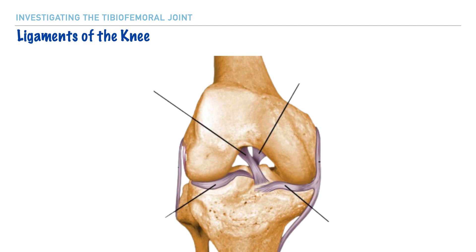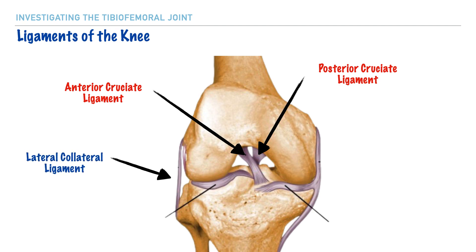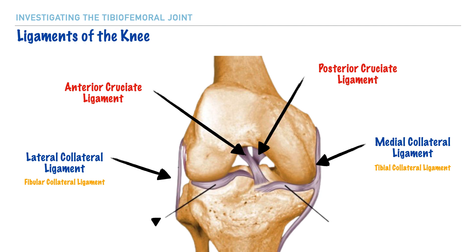Now that we've covered the general bony anatomy of the knee joint, let's look at the most prominent ligamentous structures. First, we have the anterior cruciate ligament, or ACL. Just behind it is the PCL, or posterior cruciate ligament. The term cruciate means to cross, and indeed these two ligaments cross over one another when viewed from the anterior. However, from a superior perspective, they appear parallel to one another. Next are the lateral collateral ligament — sometimes called the fibular collateral ligament — and the medial collateral ligament, sometimes called the tibial collateral ligament. Sitting atop the tibia are the menisci: the lateral meniscus and the medial meniscus.